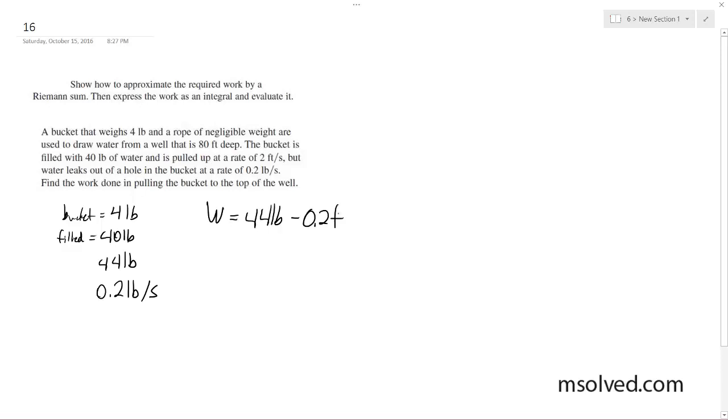Let's see here. All right, so for one second the bucket travels two feet distance, so it travels 2 feet per second. So Y is going to be equal to 2T, so T is equal to Y over 2. All right, so we've got our equation. Substituting in for Y, we get W is equal to 44 pounds minus 0.2Y divided by 2.